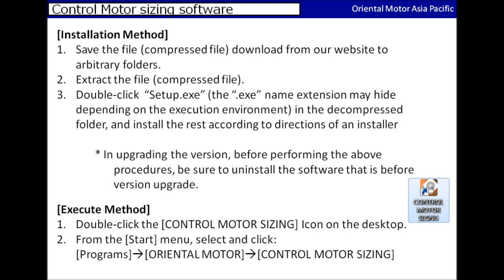To execute the software after installing, you can double click the icon found on the desktop or select it from the start menu. You can locate the software under the Oriental Motor folder, which is found in the programs folder.